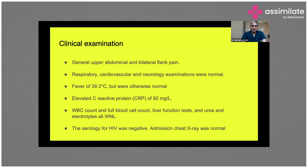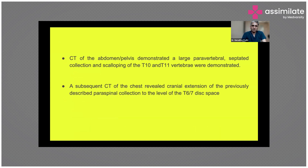The patient was febrile but otherwise looked normal. On lab parameters, there was elevated CRP and elevated WBC count; other lab parameters like LFTs, urea, and creatinine were within normal limits. HIV serology was also negative. Admission chest X-ray was normal. Not getting any particular clue, the patient was posted for CT abdomen. The CT scan demonstrated a large paravertebral septated collection with associated scalloping of the vertebra, and follow-up CT revealed cranial extension of the collection to the level of T6-T7 space.